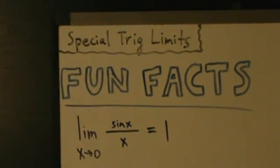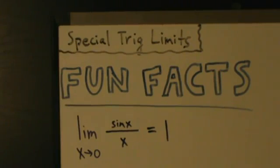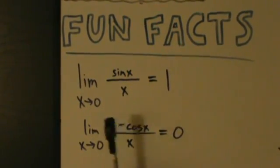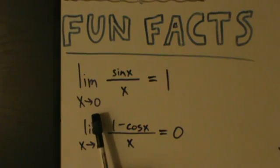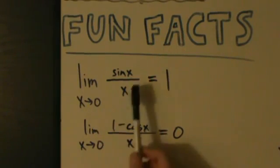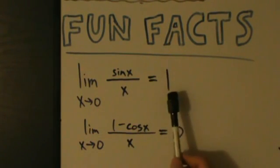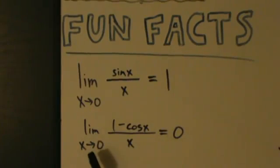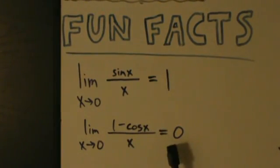In this video we're going to start talking about some special trig limits. There are two important ones worth mentioning. The limit as x approaches 0 of sine of x divided by x equals 1. And the limit as x approaches 0 of 1 minus cosine x over x equals 0.